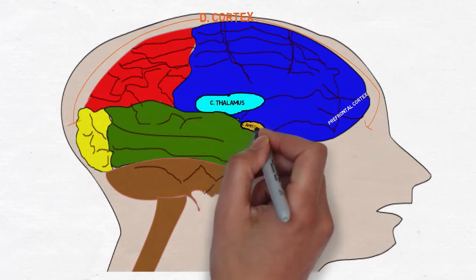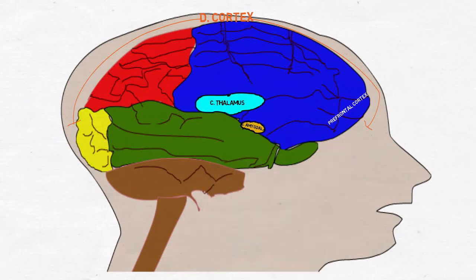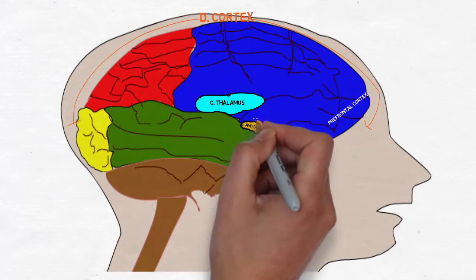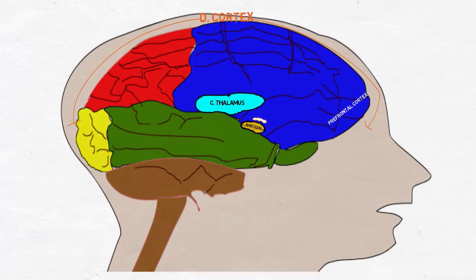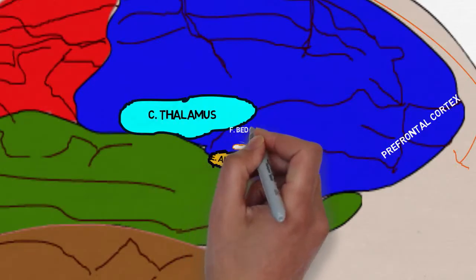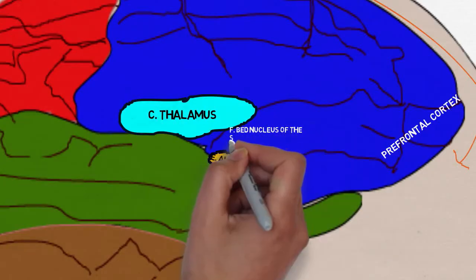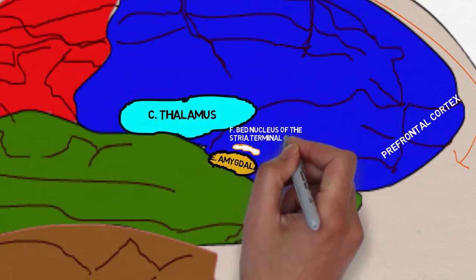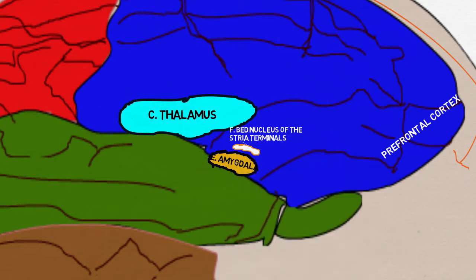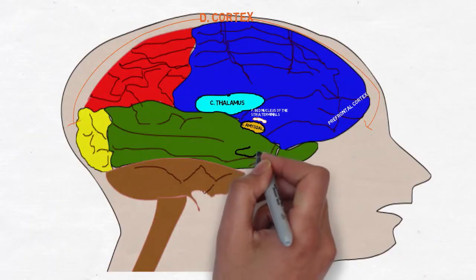The amygdala is the emotional core of the brain whose primary role is to trigger the fear response. Information passing through the amygdala is associated with emotional significance. The bed nucleus of the stria terminalis is particularly interesting when we discuss anxiety. While the amygdala sets off an immediate burst of fear, the BNST perpetuates the fear response, causing longer term unease typical of anxiety.